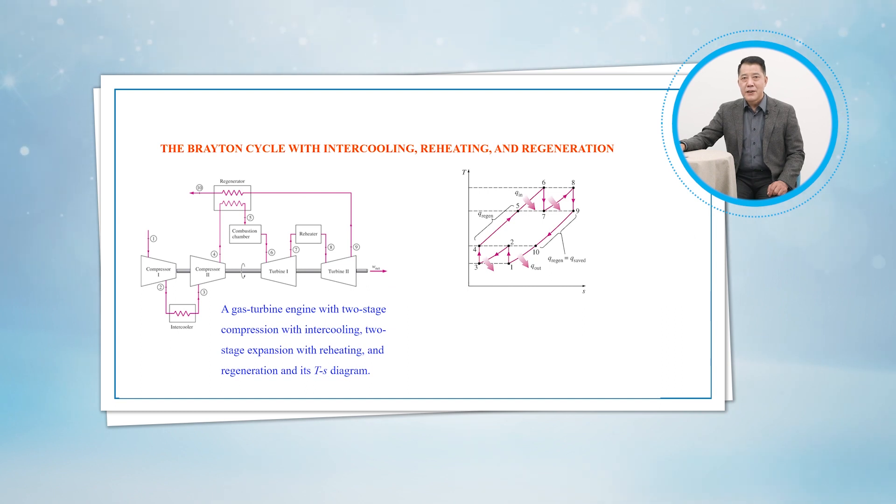The gas enters the first stage of the compressor at state 1, is compressed isentropically to an intermediate pressure P2, is cooled at constant pressure to state 3, and is compressed in the second stage isentropically to the final pressure P4 at state 4.